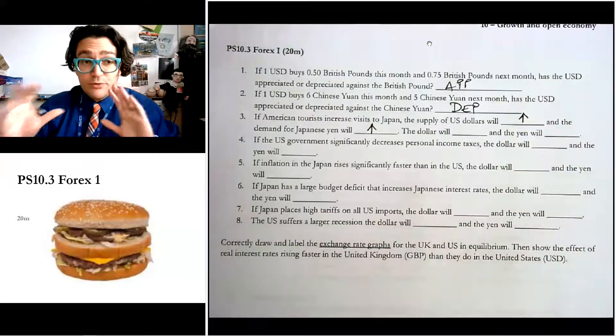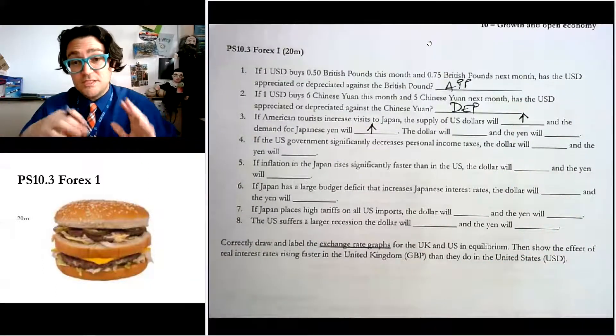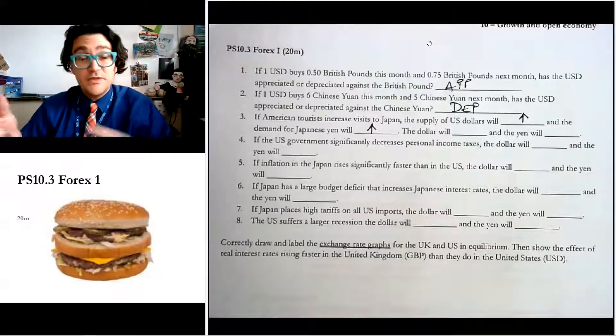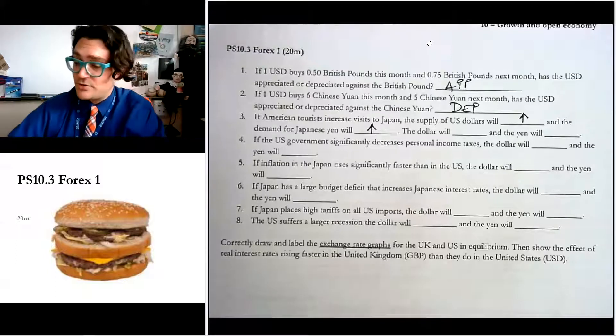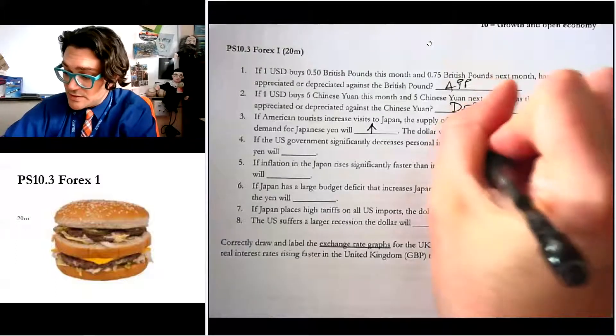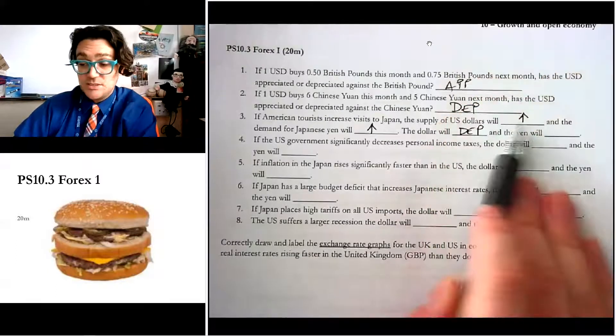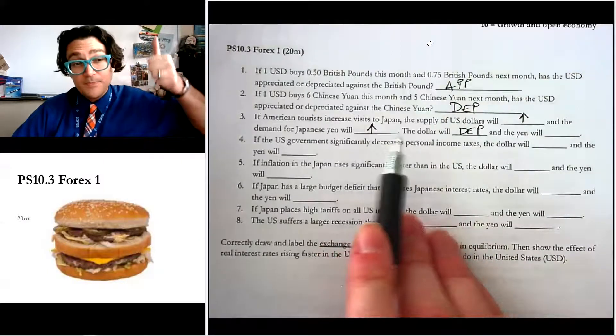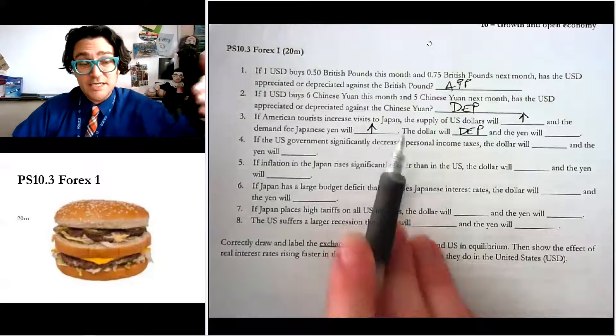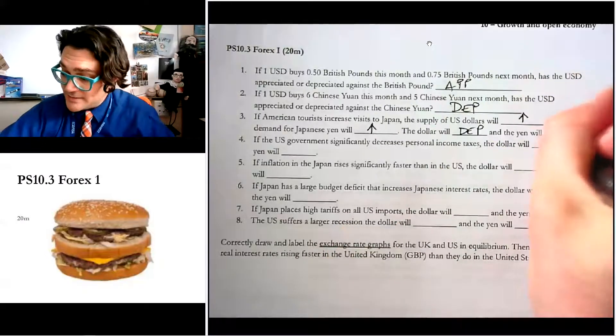Now at this point, hopefully you remember supply and demand. So if the supply of something goes up, then the price of it is going to go down. It's going to depreciate when we talk about currency. So the dollar will depreciate because the supply went up. The demand for yen, on the other hand, went up. So the price of yen is rising. So we'd say that the yen is appreciating.